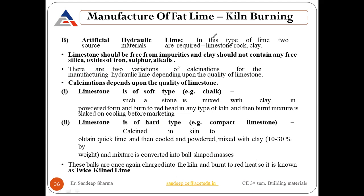In artificial hydraulic lime, two source materials are required: limestone (which should be free from impurities) and clay (which should not contain any free silica, oxide of iron, sulfur, alkalis, etc.). There are two variations of the calcination process for manufacturing hydraulic lime depending on the quality of the limestone.